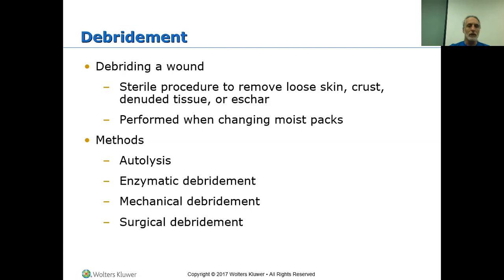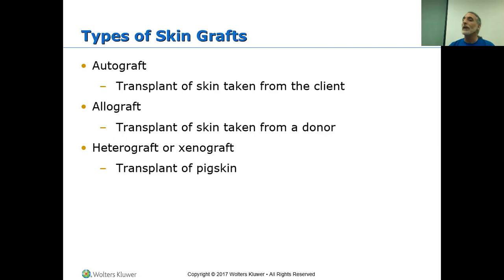Types of skin grafts — here's some medical terminology you'll see again: auto, allo, and hetero. An autograft came from the patient themselves, from another area of their own body. An allograft is skin taken from a donor — there is a potential for rejection here. A heterograft or xenograft — for example, using pig skin to form the matrix for skin to grow in, or fish skin. The use of tilapia skin has been seen more and more, because the body does not see pig skin or fish skin as a foreign invader the way it might with an allograft.